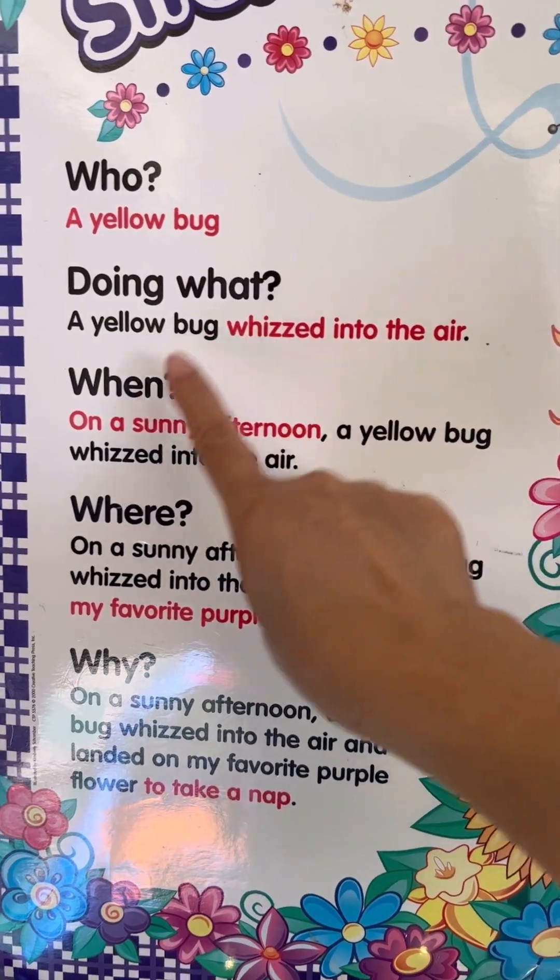Why? So that it can take a nap. On what? On my favorite purple flower. When? On a sunny afternoon. Who? A yellow bug. What did it do? Whizzed into the air and landed on your purple flower.